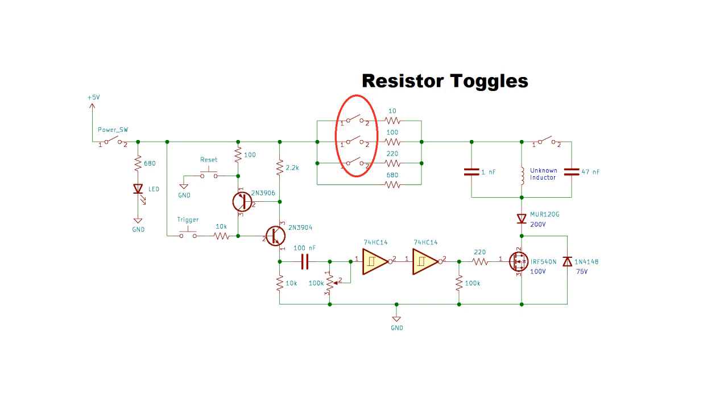The other controls I've added are resistor toggles. By default, 680 ohms limits the maximum test current, but the lower the value of an inductor, the more current it'll need to produce a readable voltage oscillation during ringing. So the option to toggle 220, 100, and 10 ohm resistors was added.